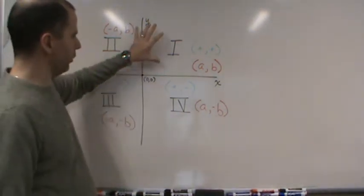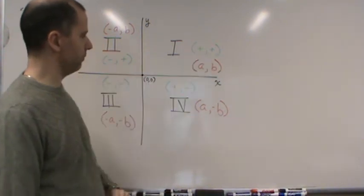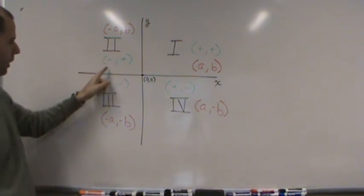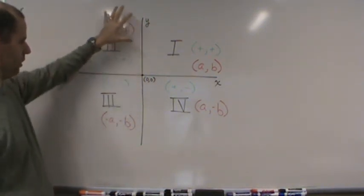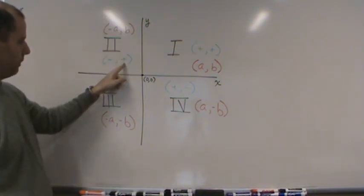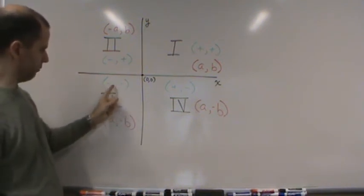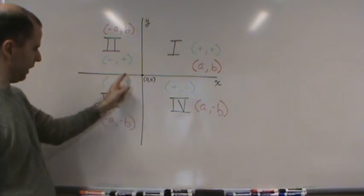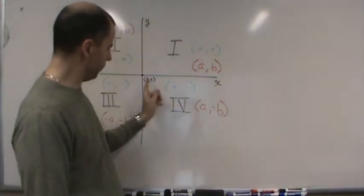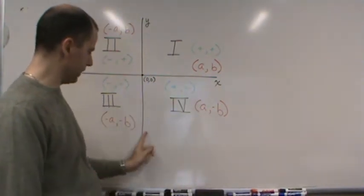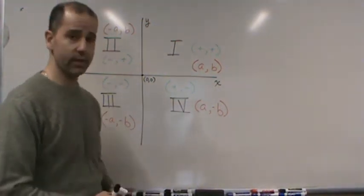All the points in quadrant one are going to be positive and positive, so x and y are both positive. In quadrant two, the x values become negative and the y values are still positive. In quadrant three you have both negative, so negative x values and negative y values. And then in quadrant four you have positive x values but negative y values.